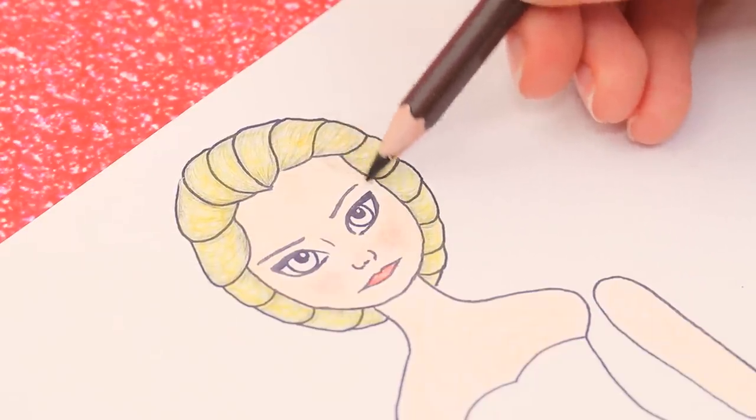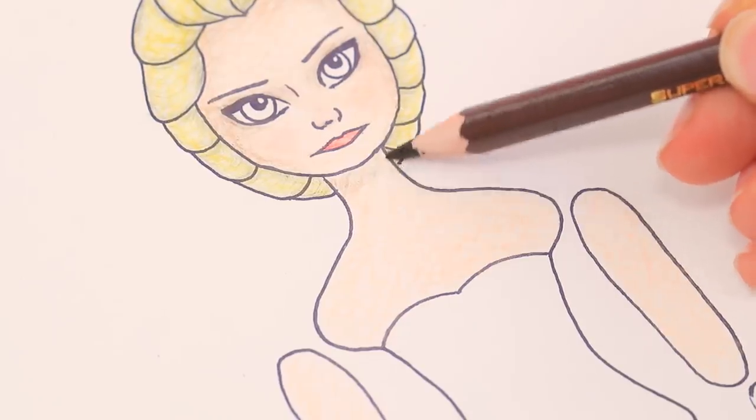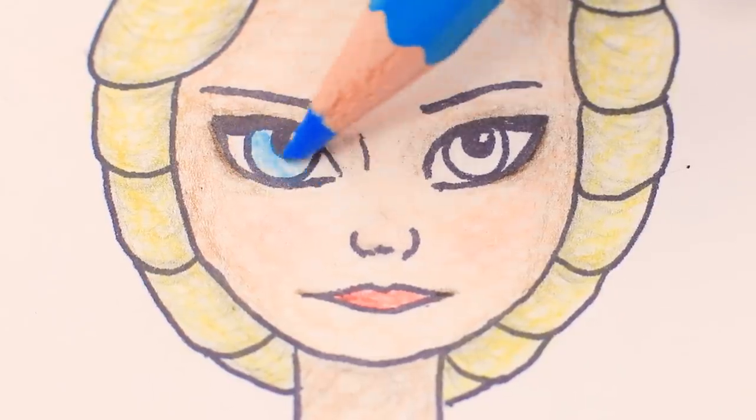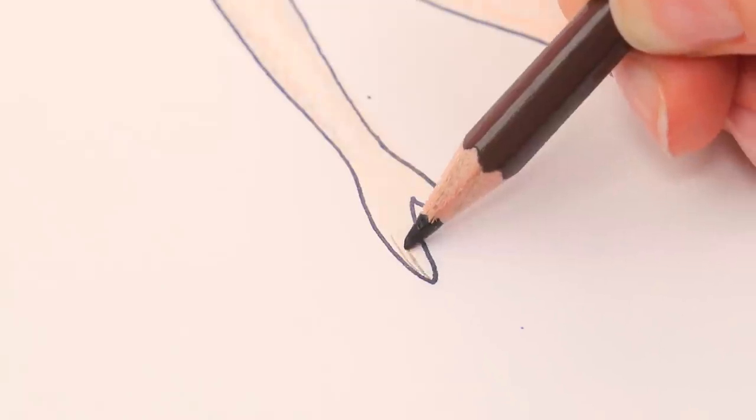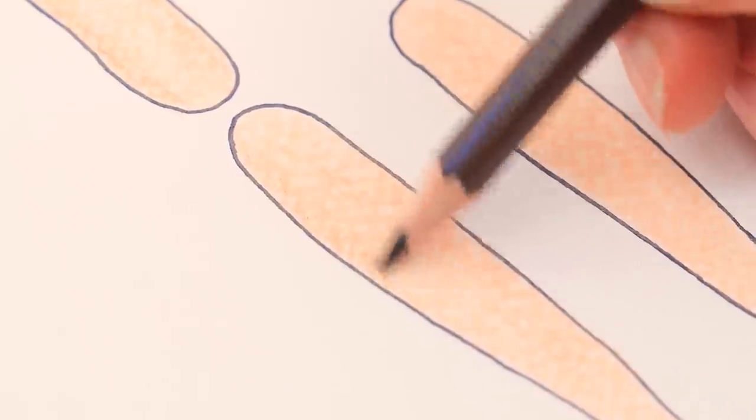Add some dimension to the face. Define the eyelids and the shade on the neck. Elsa's eyes are as blue as her icy magic! Now add shades on the arms and defined fingers. Do the same on the legs.